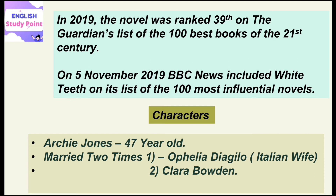Instead of committing suicide, Archie decides to relive his life and enjoy whatever he is shown in this particular life. He tries to enjoy every moment of life. He has a coin in his hand with two sides — heads and tails. He already decided in his mind before flipping the coin that if the side he chose appears after flipping, he will join a New Year's Eve party, and if it doesn't appear, he won't join. He flipped the coin and the side he had chosen in his mind appeared, so he decided to join the New Year's Eve party.